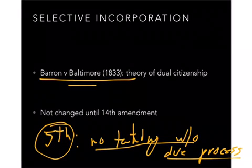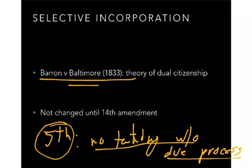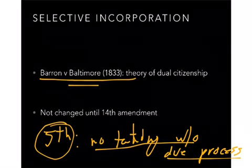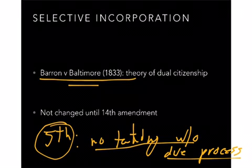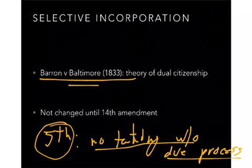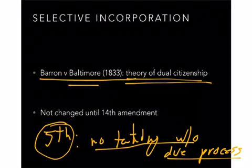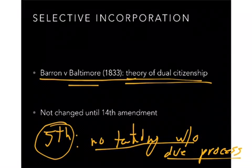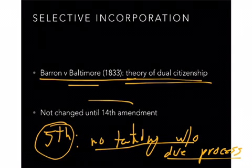Baltimore is part of a state, so he was suing the state. The court, though, is going to unanimously find otherwise. Chief Justice Marshall is going to say that the Fifth Amendment must be understood as restraining the power of the general government — it's not applicable to states, because states have their own constitutions. As a result of this, you're going to get the theory of dual citizenship, and that's not going to change until the Fourteenth Amendment.